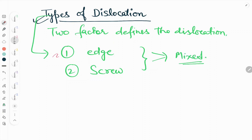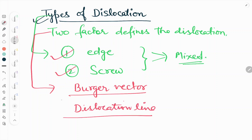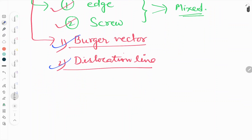We will look at what two factors define the dislocation, or how we can define dislocation with the help of these two factors. The first is Burgers Vector and the second is dislocation line. So these two factors define the dislocation — let's start.